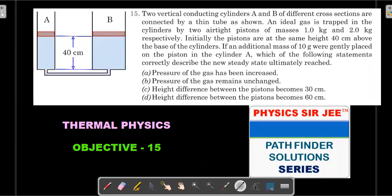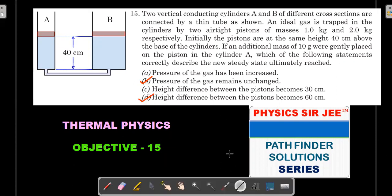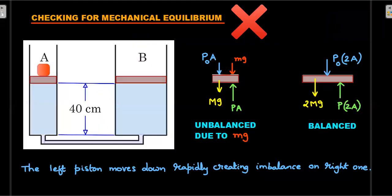Final answer for Problem 1: the pressure remains unchanged from start to end - intermediate pressures are undefined because it is an irreversible process - and the height difference between the pistons becomes 60 centimeters.